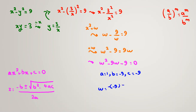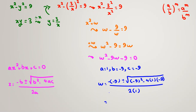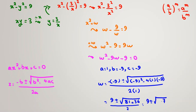So w equals negative(−9) plus or minus the square root of (−9)² minus 4(1)(−9), all over 2(1). Simplifying: negative negative 9 is 9, and 81 minus (−36) gives 81 plus 36 equals 117. So w equals 9 plus or minus the square root of 117, all over 2.